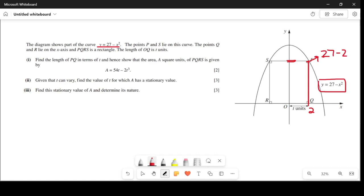But x is t here, not 2. So y is going to be 27 minus t squared. This is the length of this line, 27 minus t squared.